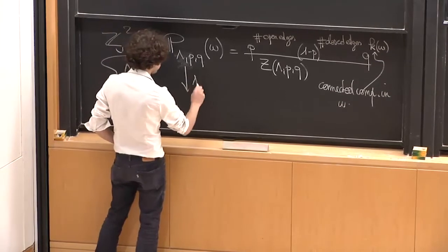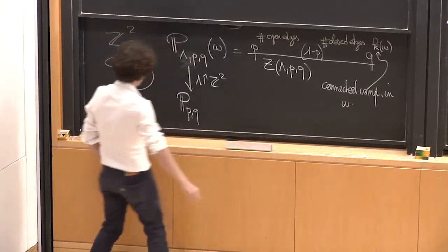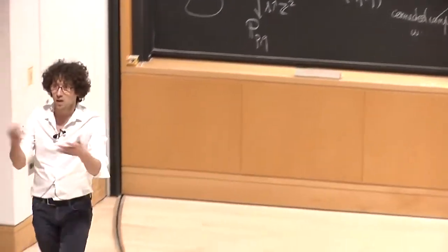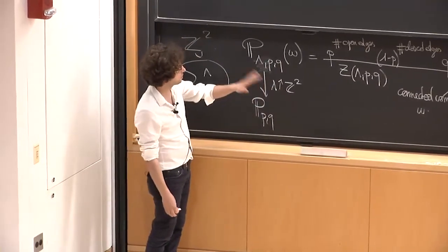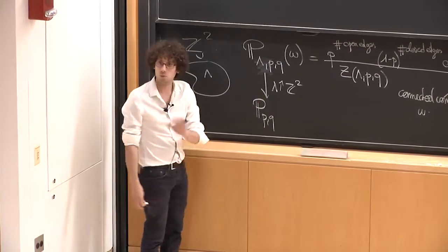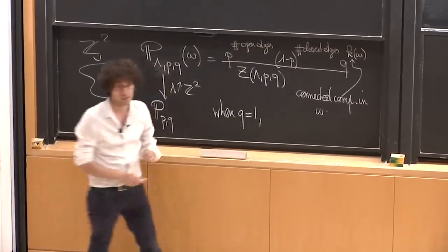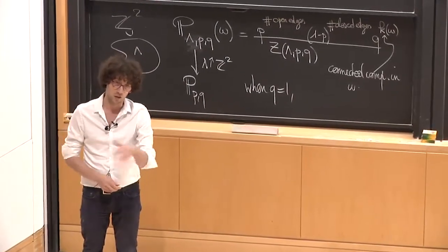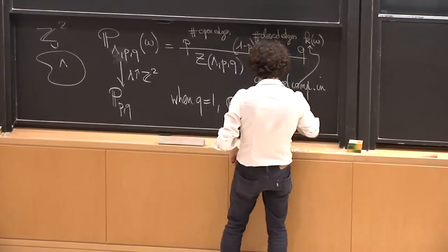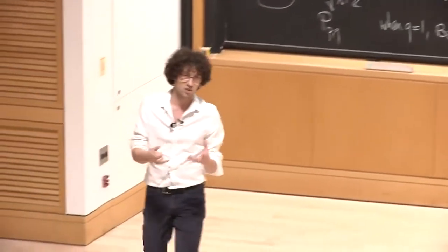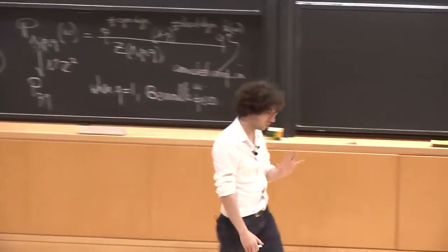That defines a measure on Λ, and then I can take Λ to infinity by taking bigger and bigger boxes to define an infinite volume measure. Think of there being a notion of a random graph in infinite volume defined for every Q. For most of the lecture, you can really think of Q equal to 1, because when Q=1, this is just choosing edges at random with probability P independently for every edge — that's Bernoulli percolation. The juice of the result lies in the treatment of the Q≠1 model.